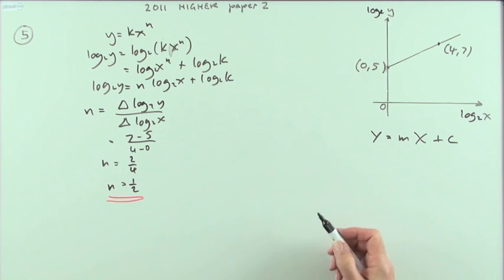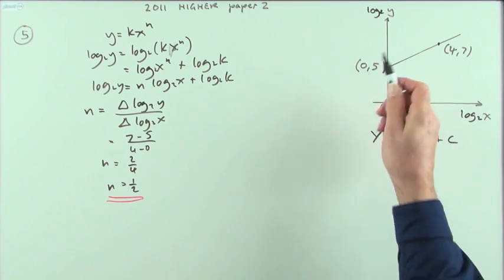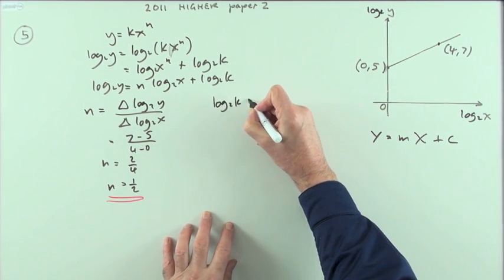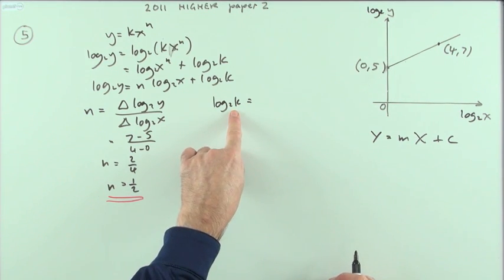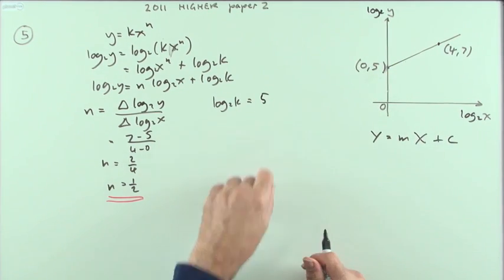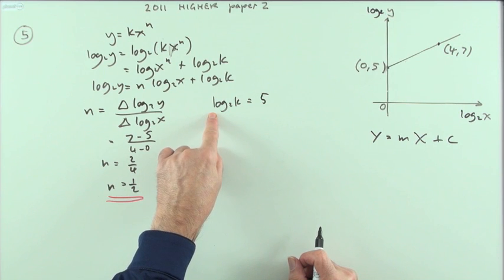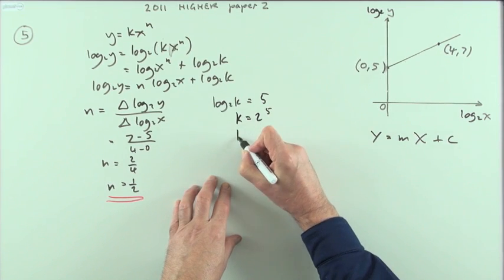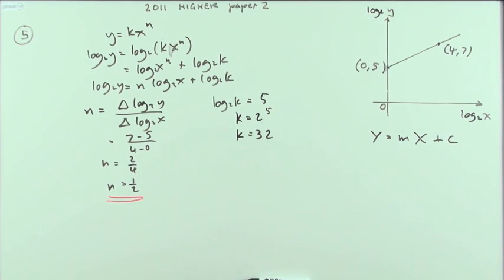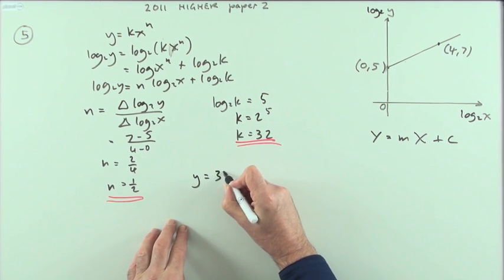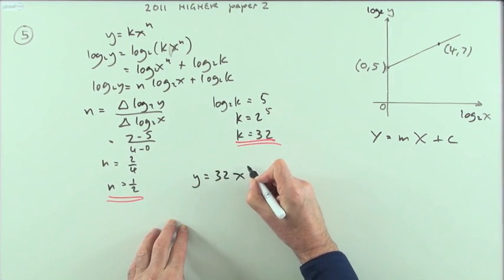And almost just as easy as finding this number at the end, because that's where it should cut the vertical axis. In other words, this part at the end, log base 2 of k should be the vertical intercept. Log base 2 of k should be this value of y. Log 2y should be 5. And that's a simple enough thing to solve. To get rid of log base 2, perform the inverse, which is 2 to the power. So k would be 2 to the 5, so k equals 32. And that's it done. It's just like finding the equation of a line. Write it out again, doesn't ask for that. The formula should have been y equals 32, x to the power a half.